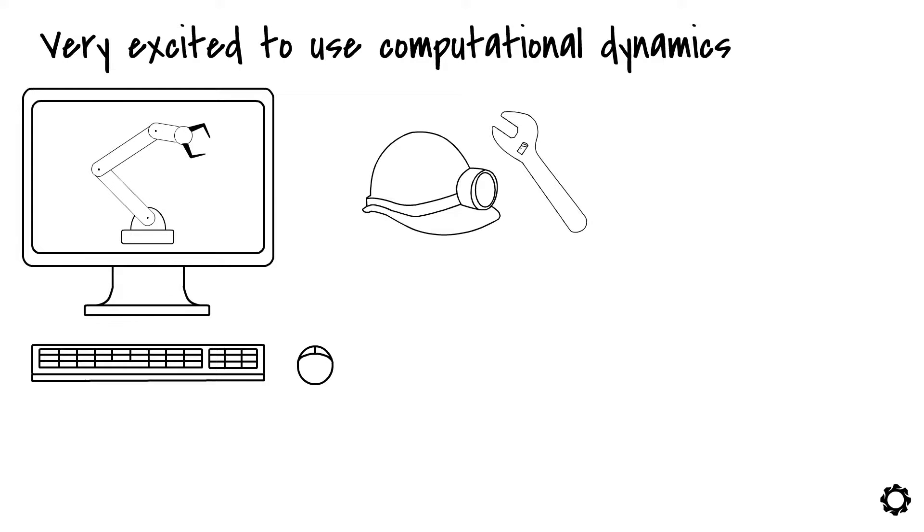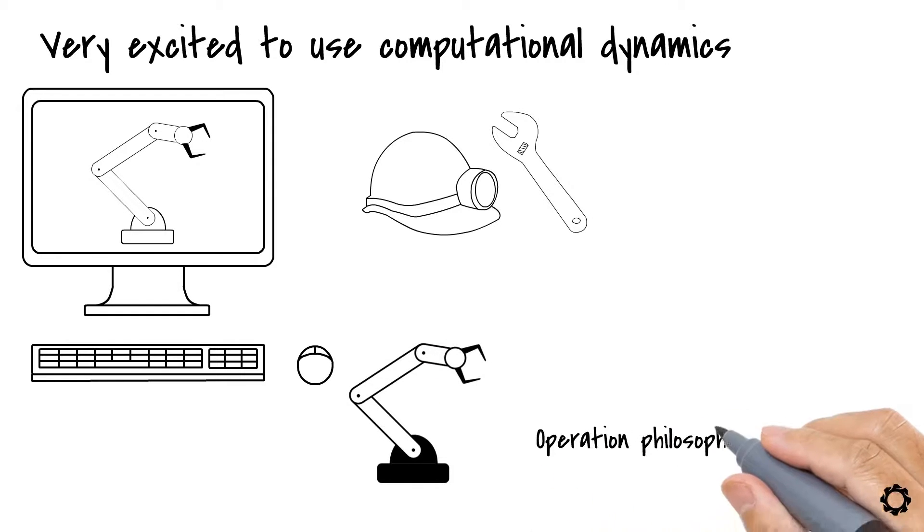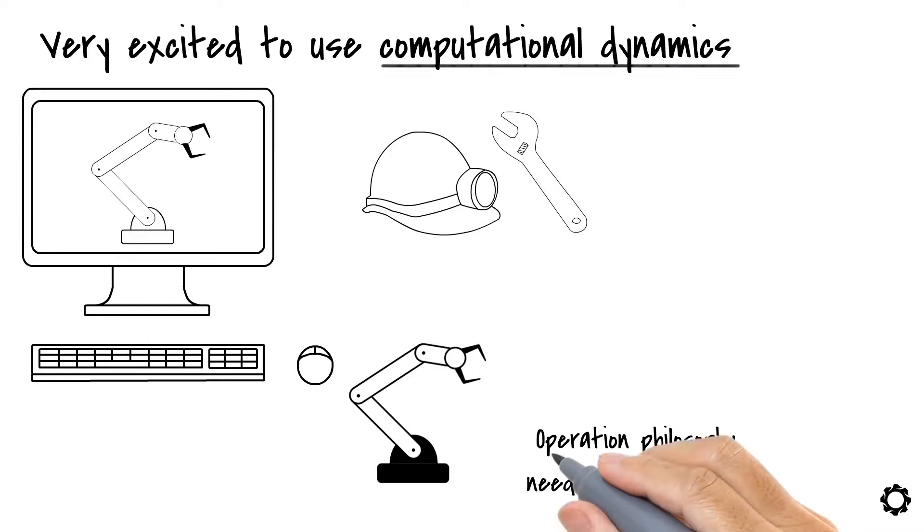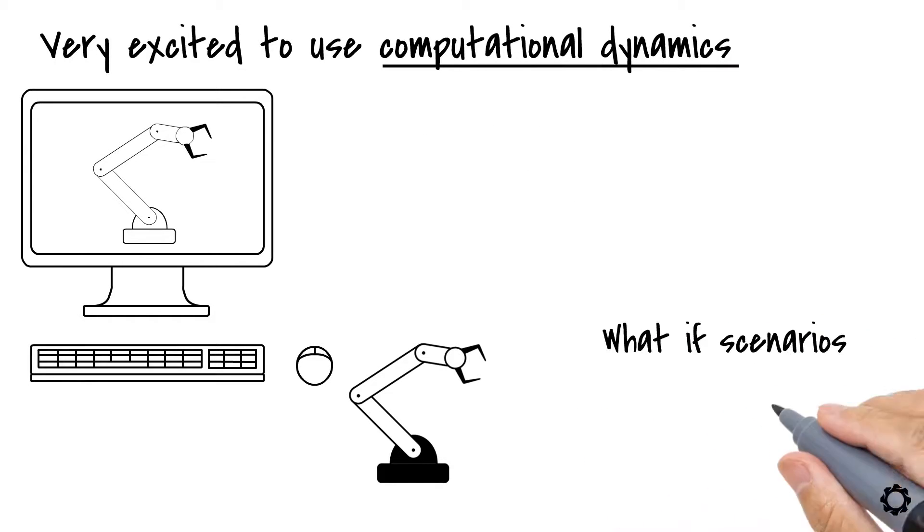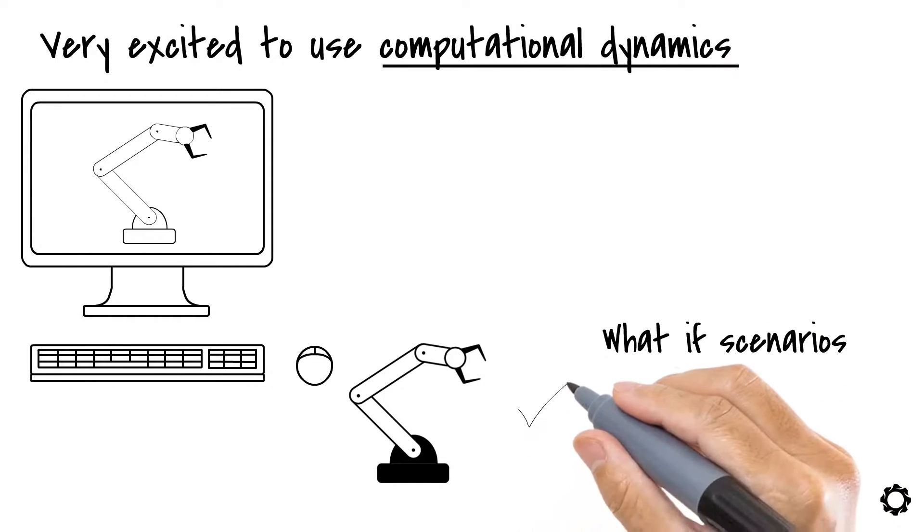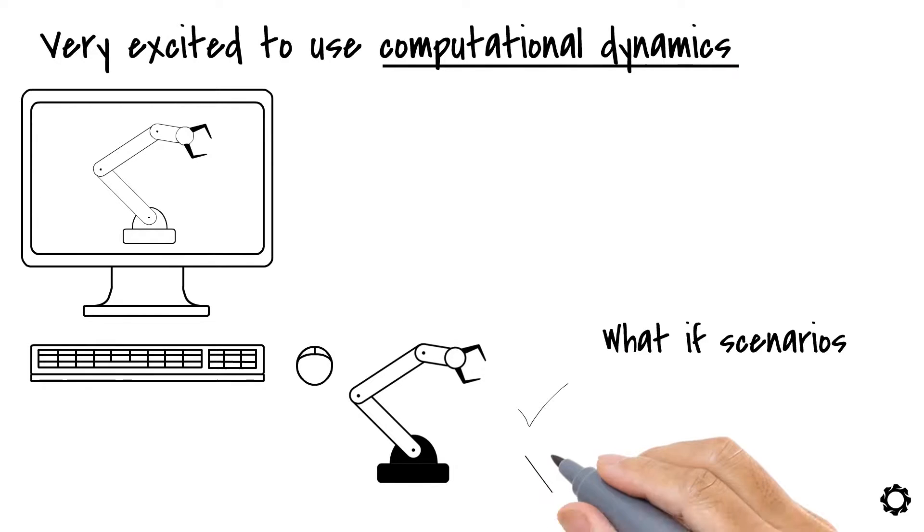Imagine that you are an engineer in charge of validating the performance of a physical machine which has been causing some problems or whose operation philosophy needs to be changed. You get to use computational dynamics to investigate the details of its operation. You can propose, for example, what-if scenarios to see if the machine meets the expectations or if it would resist the new conditions.